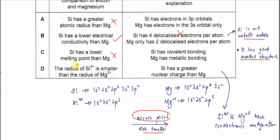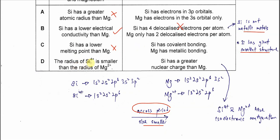D. The radius of the silicon ion is smaller than the radius of the magnesium ion. Silicon ions and magnesium ions have the same electron configuration. We call this isoelectronic configuration.